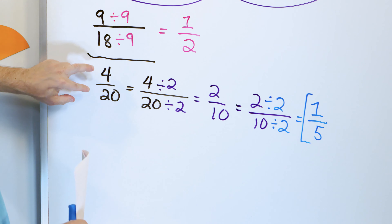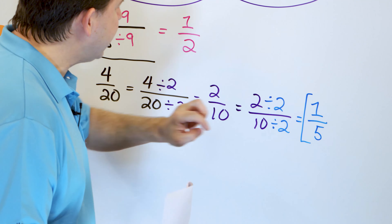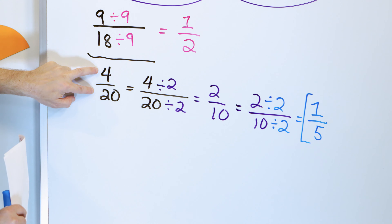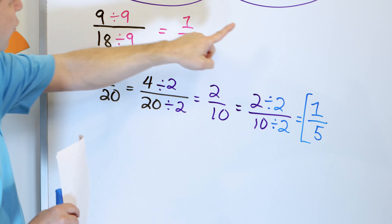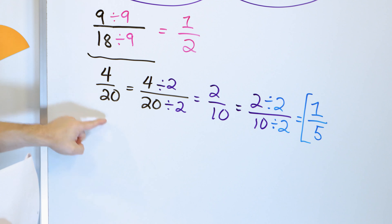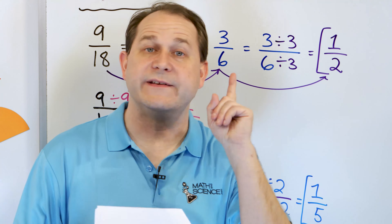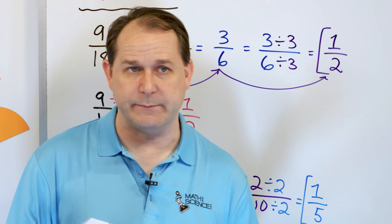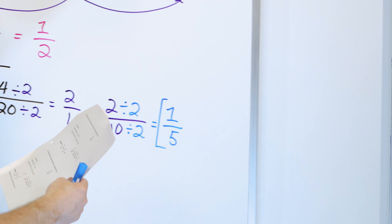If I started by just dividing by four — four divided by four is one, twenty divided by four is five — I would go straight from four-twentieths to the answer in one step. As long as you get the right answer, that's fine.